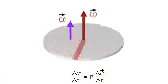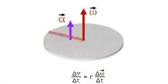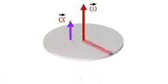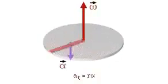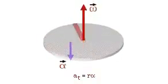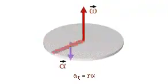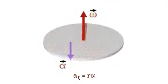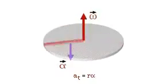The tangential component of the object's linear acceleration vector is tangent to the object's path. Its magnitude is r times the magnitude of the angular acceleration. The angular acceleration vector points along the axis of rotation and is given by the right-hand rule.